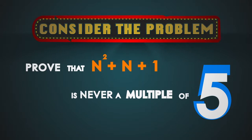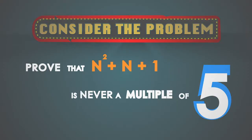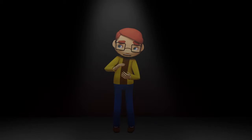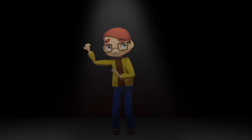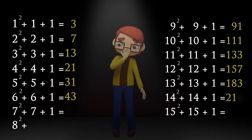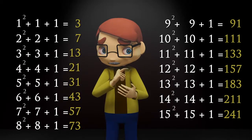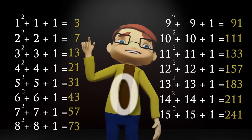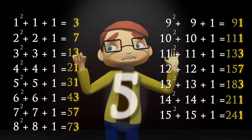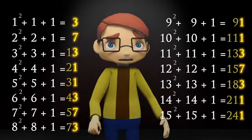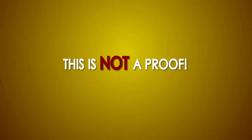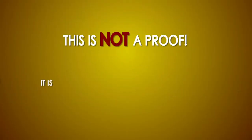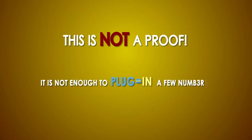More than half of the students submit an answer like this. I tested n from 1 to 15, and this is what I got. Since none of these cases have a unit's digit of 0 or 5, n squared plus n plus 1 is never a multiple of 5. This is not a proof. It is not enough to plug in a few numbers.